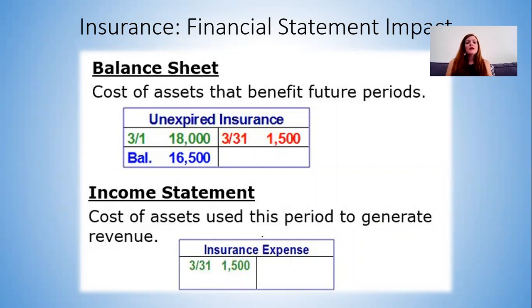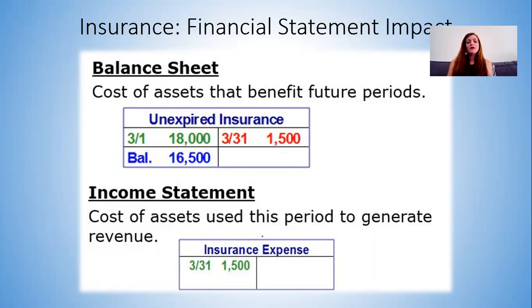The last thing we'll look at for this lesson is how it impacts the financial statements. The $18,000 of unexpired insurance starts as a debit in the T-account. At the end of the month, we've incurred the first month of expense — $1,500 — which goes on the right side of the T-account as a credit, decreasing our balance to $16,500 on the balance sheet. On the income statement, we put the $1,500 expense as a debit on the left side, which decreases our income and retained earnings to recognize the insurance expense incurred for the month of March.